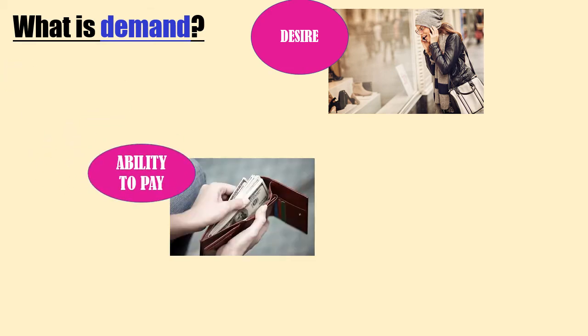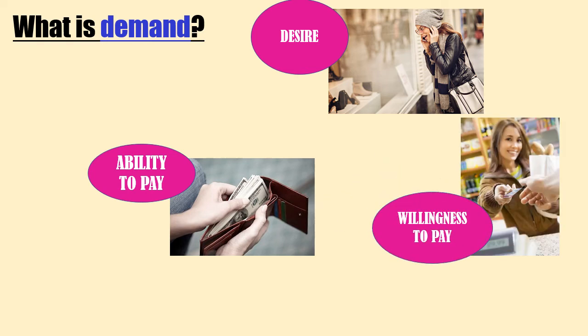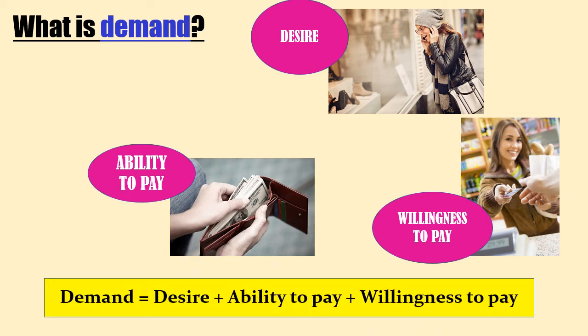Now consider another situation where you have the ability to pay for it but you don't have the willingness to pay for that particular commodity. In that case also your desire will not be transformed into demand. So desire for a commodity should be backed by ability to pay and willingness to pay to transform it into demand. Demand is equal to desire plus ability to pay plus willingness to pay.